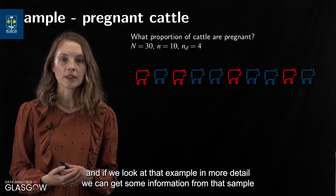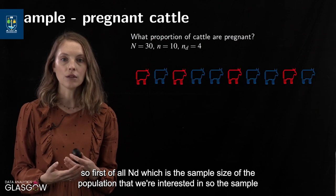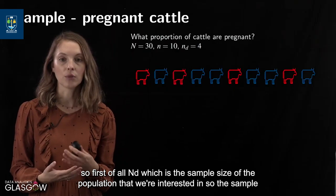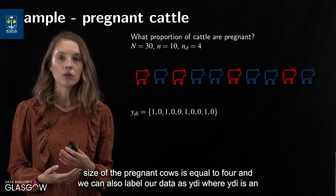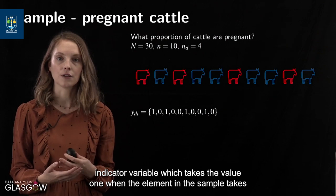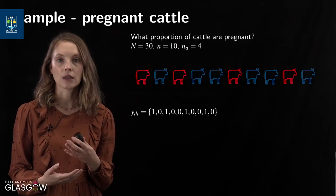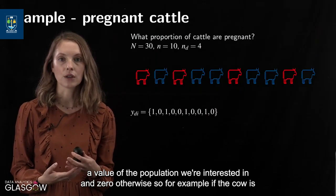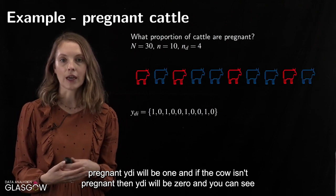From that sample we can extract information. First, ND — the sample size of the pregnant cows — is equal to four. We can also label our data as YDI, where YDI is an indicator variable which takes a value of one when the element in the sample belongs to the population subset we're interested in, and zero otherwise. So if the cow is pregnant, YDI equals one; if not, YDI equals zero.